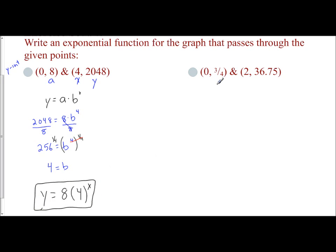Let's do the same thing on this example. (0, 3/4ths) and (2, 36.75). Again, we notice that since our x coordinate is 0, this is my y-intercept, which means this is my a value. And I'm going to label the other ones as my x and my y.